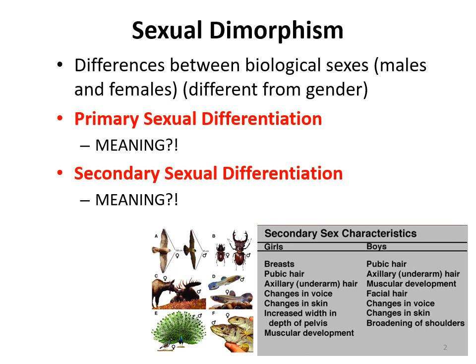Secondary sexual differentiation is the overall difference in outer appearance — things like breast formation, pubic hair development, changes in voice and skin, and overall muscle changes. Basically, think of these as the things you will see occurring during puberty. Primary differentiation you see in terms of fetal development, whereas secondary differentiation includes overall changes that can occur in puberty.